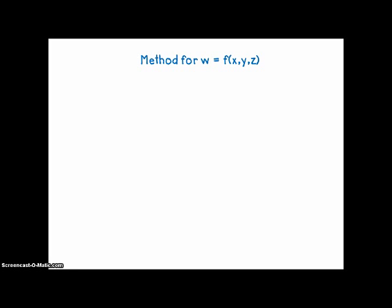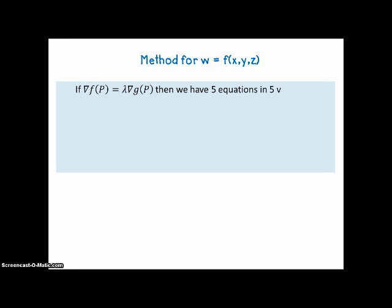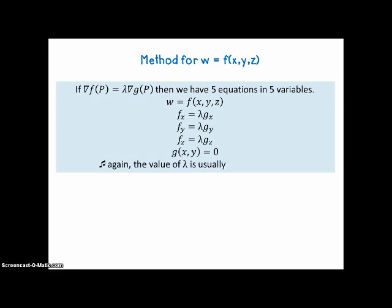For four-space, w = f(x,y,z), the method is similar. If the gradient of f at p equals lambda times the gradient of g at p, then we have five equations in five variables: the original function, the three partial derivatives, and g set equal to zero. Again, the value of lambda is usually unimportant. This extends to five-space or six-space — you keep adding equations and unknowns, but the algebra gets worse and worse.